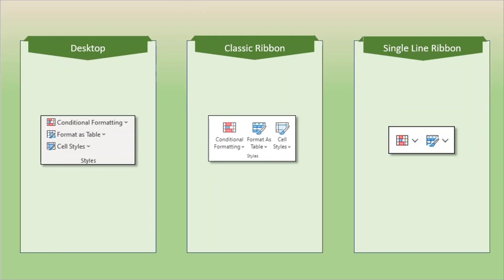One of the smaller groups that has very few buttons is the styles group. For the desktop version, it contains conditional formatting — where I can determine how a cell is formatted based on its contents — I can format it as a table, which a lot of people find a great shortcut with predetermined formats, and then cell styles. While there are some pre-created cell styles, you also have the option to create your own. As we look at the classic ribbon, we have exactly the same choices there.